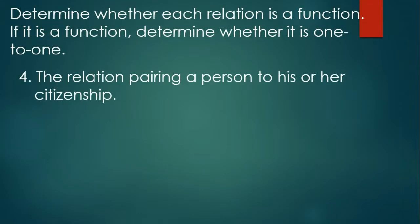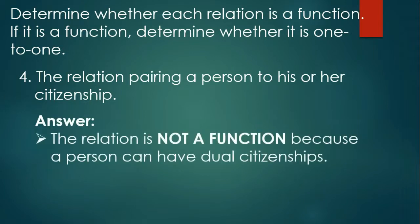Last example: the relation pairing a person to his or her citizenship. For example, Maria's citizenship is Filipino. But if we analyze further, Maria could have dual citizenship — if she lives in America long enough, she could become an American citizen. Therefore, the relation is not a function because a person can have dual citizenship.